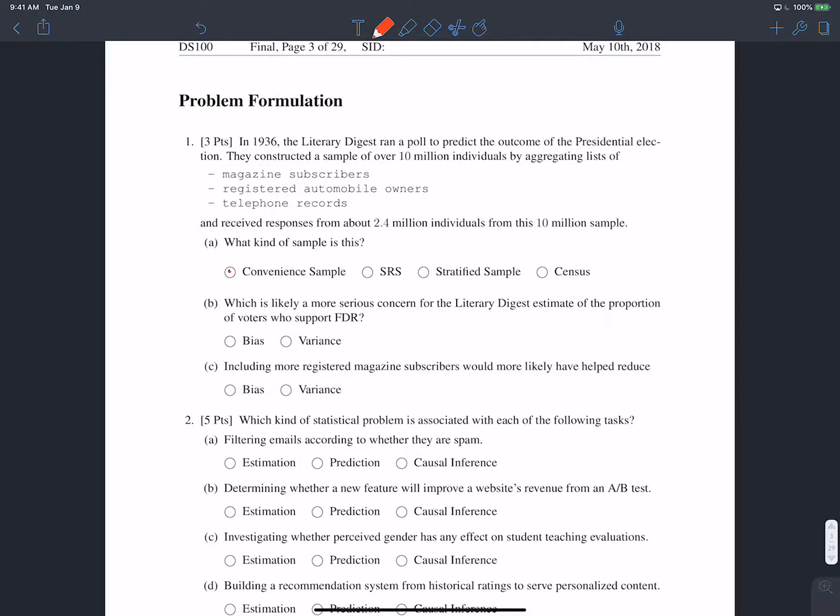It turns out that this is a convenience sample and the reason for that is because they just happened to have lists of magazine subscribers and registered automobile owners and telephone records. They didn't break their population up into different strata and sample from them. They just happened to take whoever was convenient for them and sampled from them. So that's why this is a convenience sample.